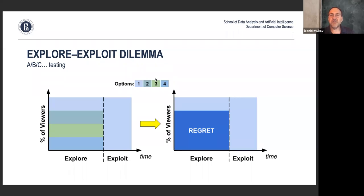That lost opportunity is called the regret zone. Of course, if you knew what the best option was, you wouldn't have to run A/B tests — you would always run the best option. But the thing is, you don't know. So the question is: is there any way to balance this explore-versus-exploit strategy — on one hand still trying different options, but then converging to the best one with minimal regret and minimal wasted customers?